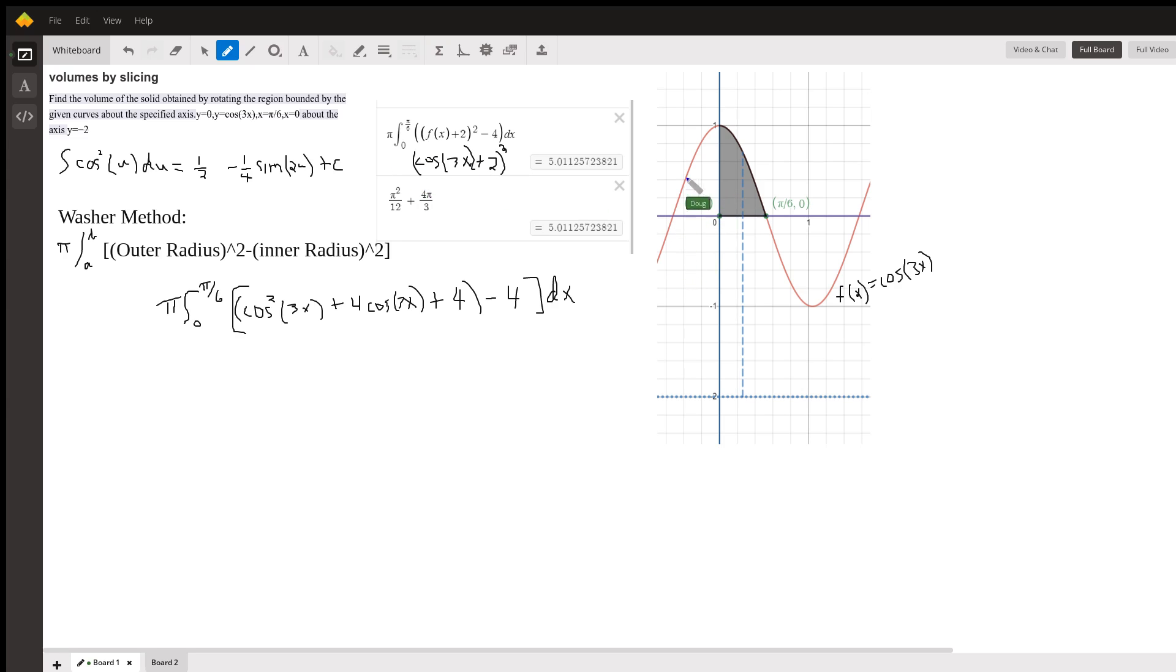Here's a graph from Desmos that shows what's happening. The red curve, f of x, is the cosine of 3x. The area under that curve from 0 to pi over 6 above the x-axis is the shaded gray region.